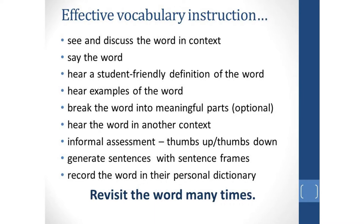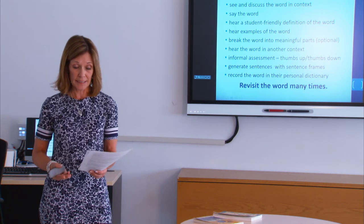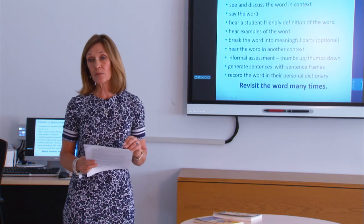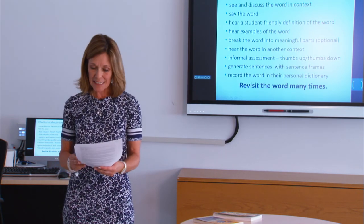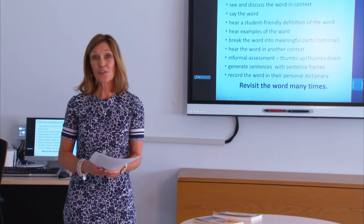The thumbs up and thumbs down activity is a quick assessment for the teacher to see if students have grasped the meaning. If some students haven't, the teacher could re-teach that word in a smaller group. Sentences are generated for students to use the word, and sentence frames are provided to give support. If students can relate the word to their own experience by generating a sentence, they're better able to retain the word. Then they record the word in their personal dictionary for future reference in writing and reading — this promotes student engagement, helps them keep track of words, and provides accountability. An optional piece would be to break the word down into parts and talk about prefixes, suffixes, and root words. Then this word is revisited many times over the next few days, weeks, and months so that it is retained and used.